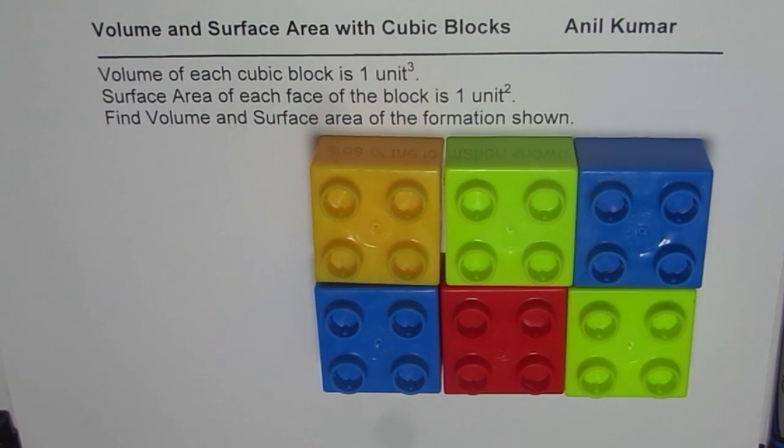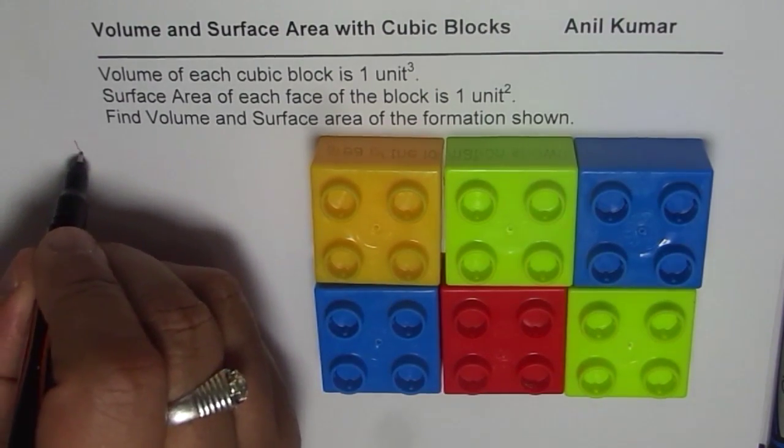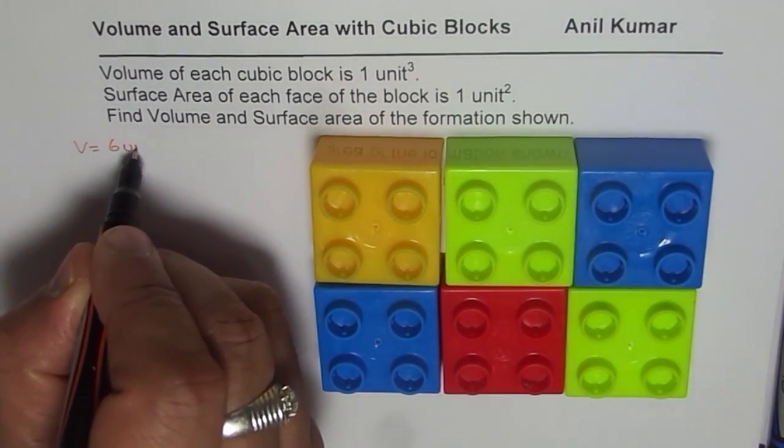If that is the case then you need to find surface area of this block and the volume. As far as the volume is concerned, it's a combination of all six so we know volume is six unit cube.